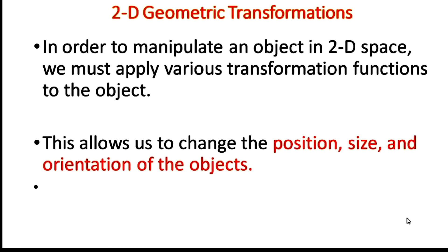Today, we are going to see 2D geometric transformations. In this type of transformations, we can manipulate an object in 2D space. For example, if you want to change the position of an object, size of an object, or orientation of the object, it can be done using these types of transformations.